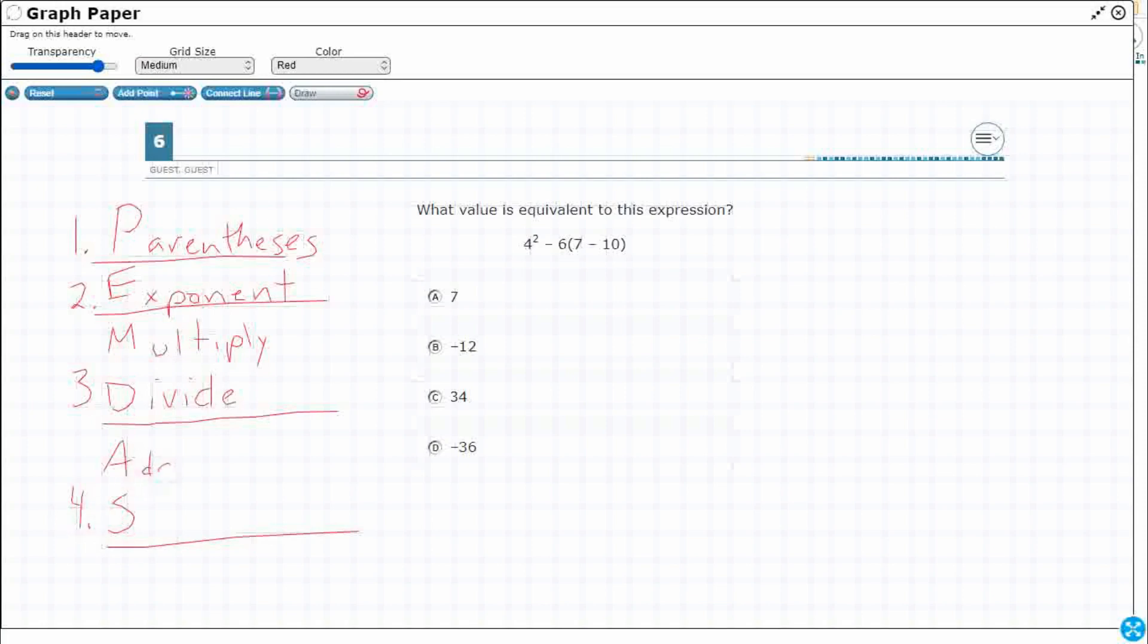Same thing with this addition and subtraction. That's our fourth layer. If you see subtraction first going left to right, you do it before the addition. They are inverse operations. They are equal.